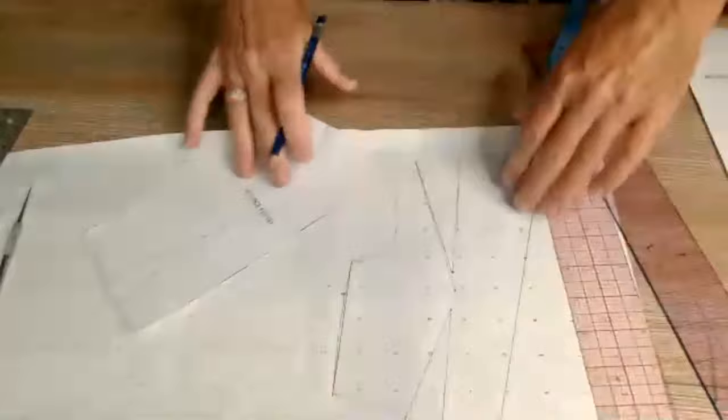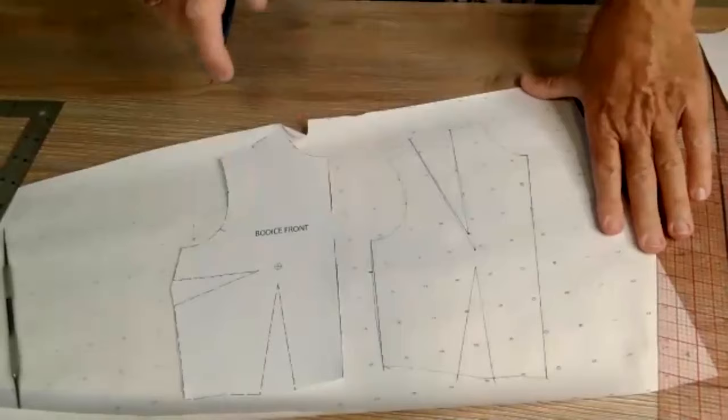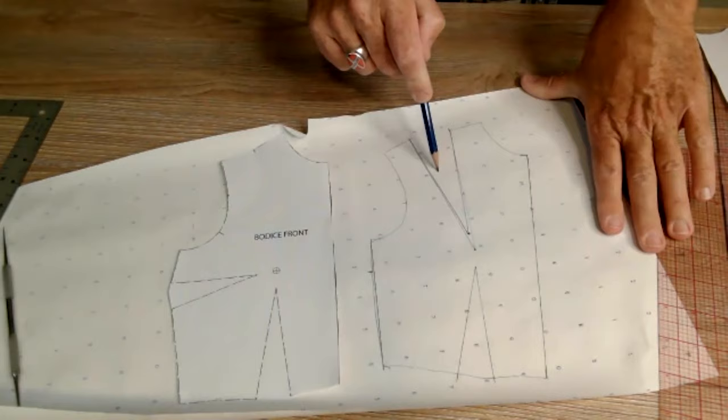So what we have now is the same bodice, but what we've done is we've taken this and transferred it up to here into the shoulder. Now we can do this with any of the darts in the bodice.